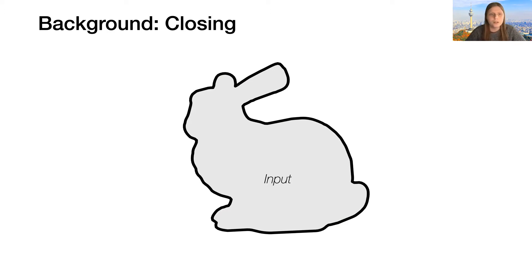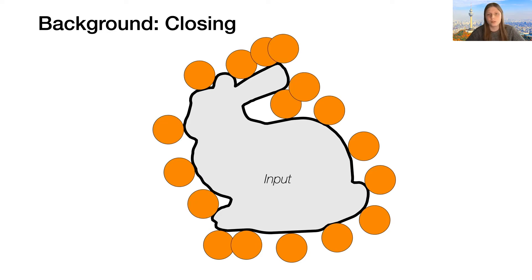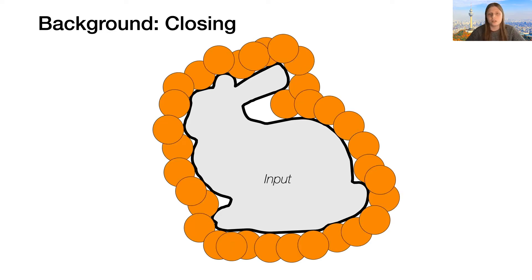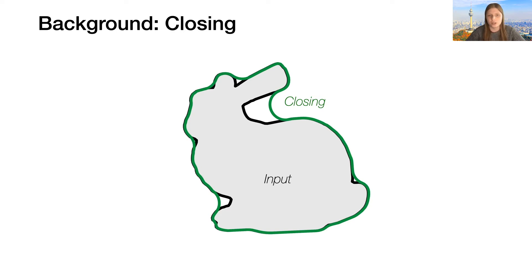Imagine I have my input here. And what I'll do is I'll take a disk with the same radius as the amount that I did the offset by before, and I'm going to try and draw circles of this radius outside the shape, cramming them into every corner, as long as they do not intersect with the interior of the shape. Now I take the region of space that wasn't covered by any of these circles, and this is exactly the closing of the shape.